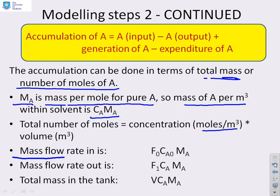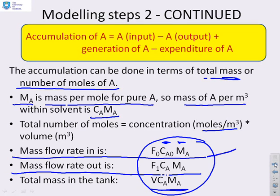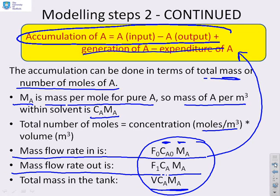The mass flow rate in is going to be the flow rate F0, times the concentration CA0, times the mass per mole Ma. The mass flow rate out will similarly be F1 times CA times Ma. And the total mass of A in the tank is the volume V times CA times Ma. We're going to use these three equations in combination with the balance equation to get our model. Note that the units are not the same — the total mass in the tank is just a mass, whereas the two flow rates have units per second — so we need to differentiate the tank mass term with respect to time in order to match units.